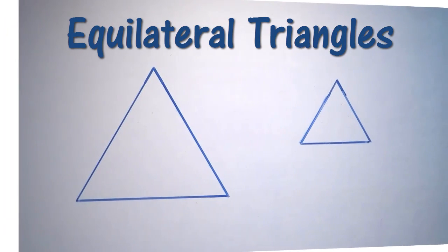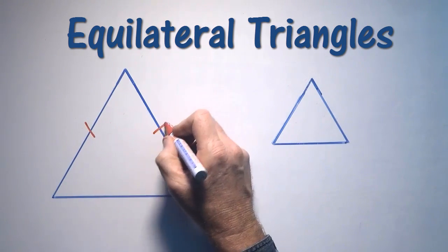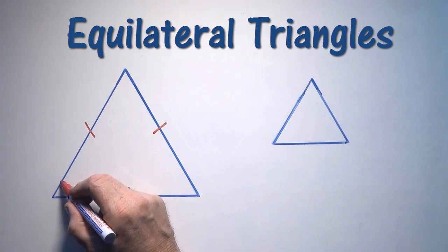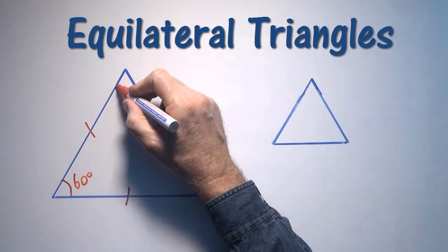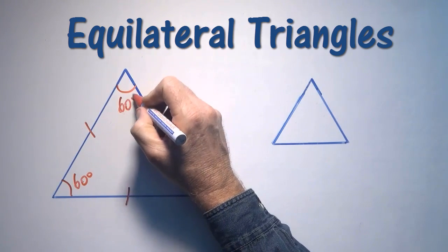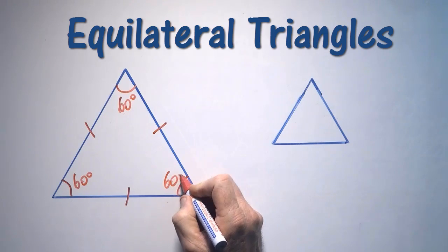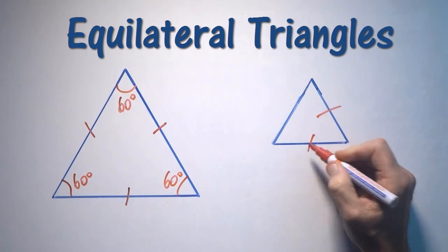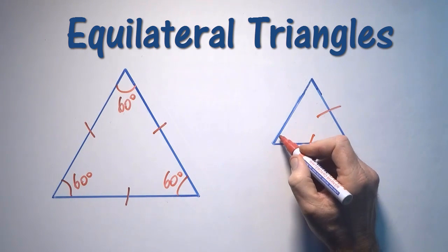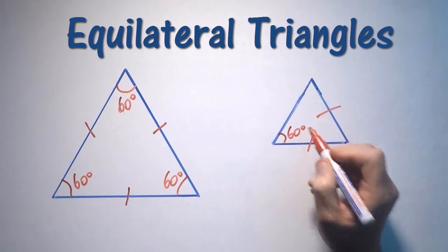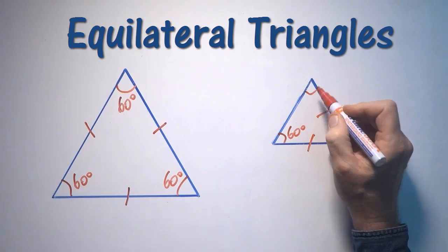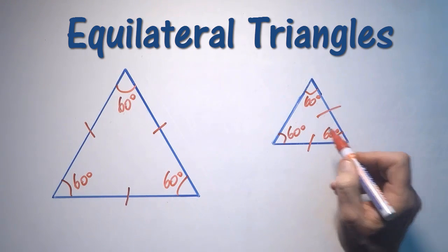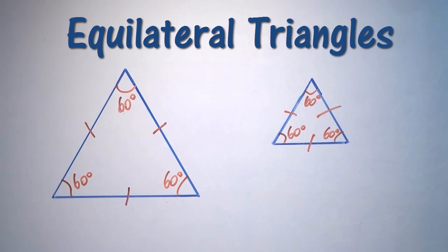If I have an equilateral triangle, I have by definition a triangle with three equal sides. Each angle will be 60 degrees — 180 divided by 3 is 60. Note that if I have a triangle with just two equal sides and one angle of 60 degrees, then I would know that this angle is also 60, and this angle also, so it would turn out to be equilateral.